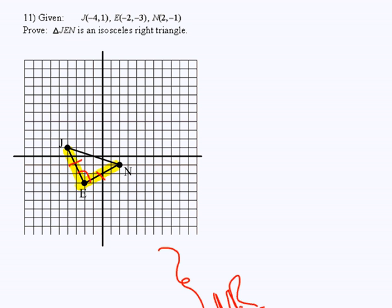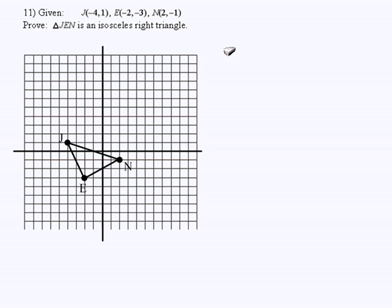So what's one application of this? Well, this is useful in proofs. Here's a proof from the geometry regents — it says to prove that this is an isosceles right triangle. An isosceles triangle is one in which two sides are equal, so I have to show that two sides are equal. A right triangle has a 90-degree angle, so to prove that, I have to show that two sides are perpendicular.